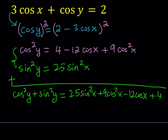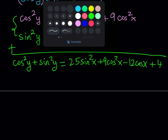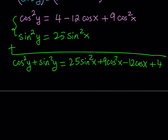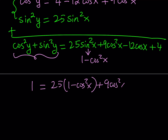The expression on the right-hand side contains two different functions — sine x and cosine x — but sine x is squared. So by using the Pythagorean identity, I can convert sine squared x to 1 minus cosine squared x. And sine squared y plus cosine squared y equals 1. So we get: 1 equals 25 times the quantity 1 minus cosine squared x, plus 9 cosine squared x, minus 12 cosine x, plus 4.